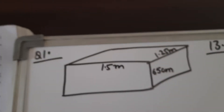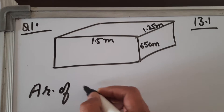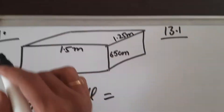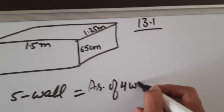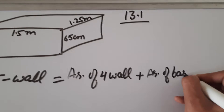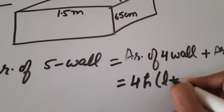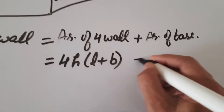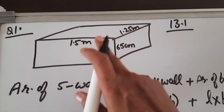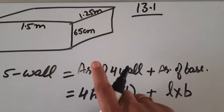The formula for the area of five walls was given yesterday. Area of five walls equals area of four walls plus area of base. Area of four walls is 2h into (l plus b), and area of base is l into b, because the base is rectangular. All parts of the box are rectangular.